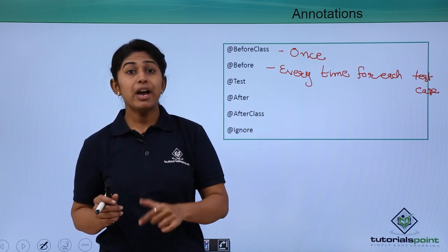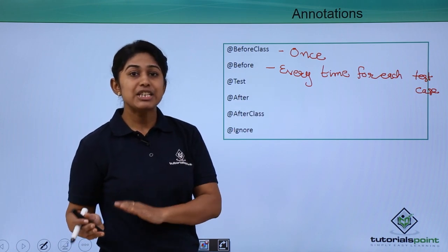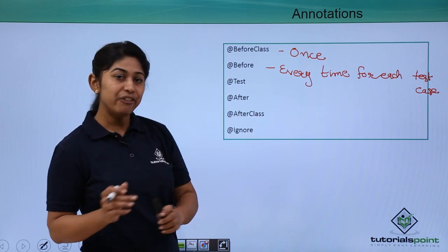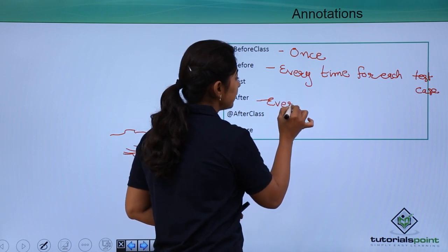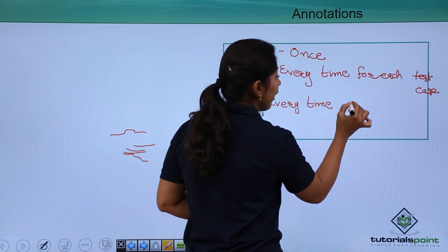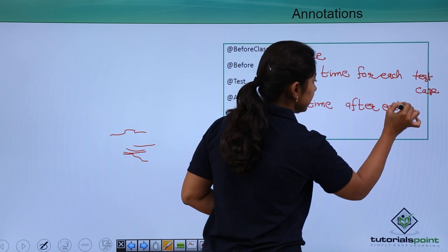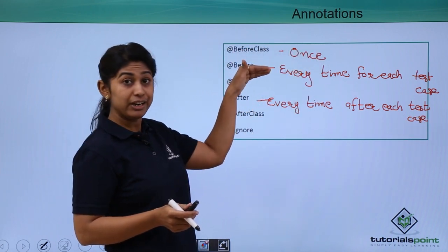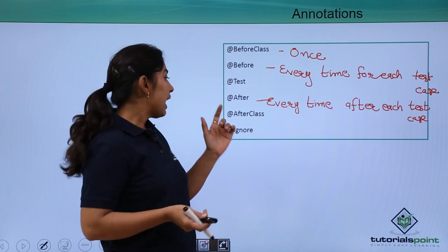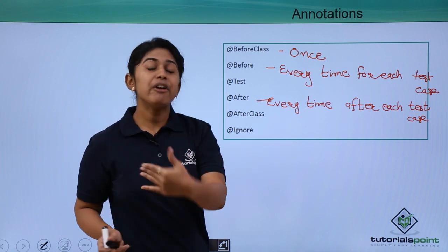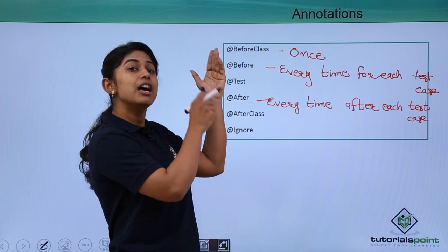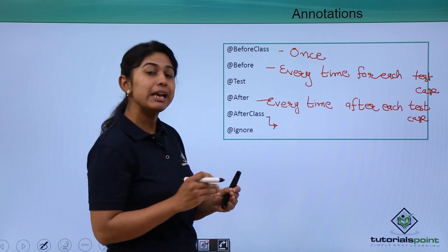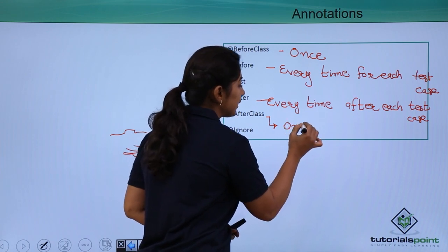Whatever you have initialized in the @Before method, that initialization should be released in the @After method. The @After annotation will be executed every time after each test case. So whatever you initialized in @Before, that should be released in @After. The next annotation is @AfterClass — whatever you initialized in the @BeforeClass annotation method, those objects should be released in the @AfterClass annotation method. This will be executed once, after every test has been executed.